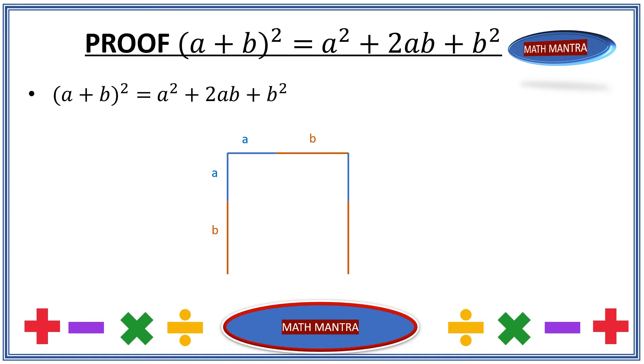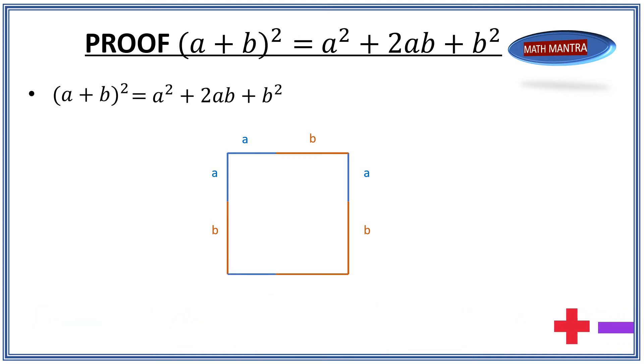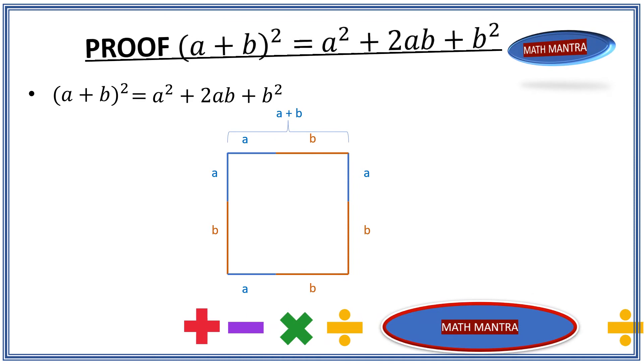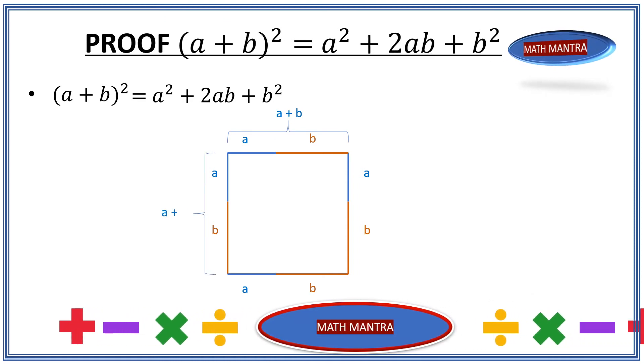So now we have copied these lines over to the right and the line segments will remain a and b, and the total line segment will remain the same, a plus b. Now let's copy these lines down as well. So now as you can see we have a square and the sides of the square have a length of a plus b.